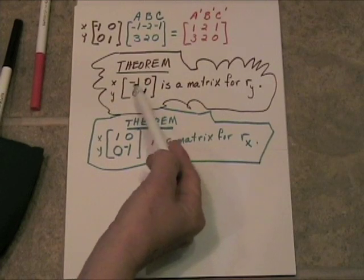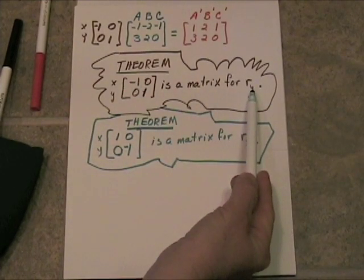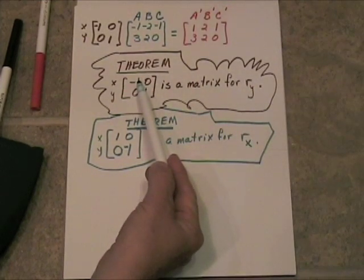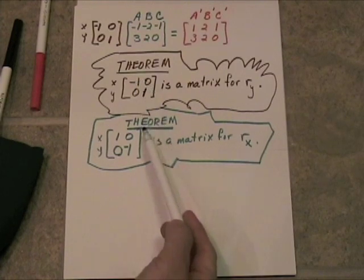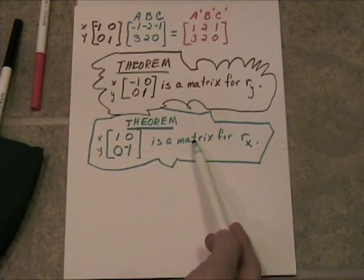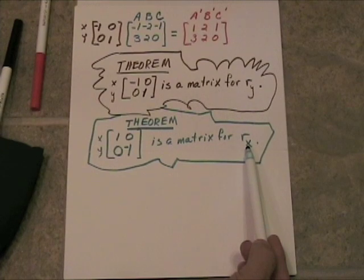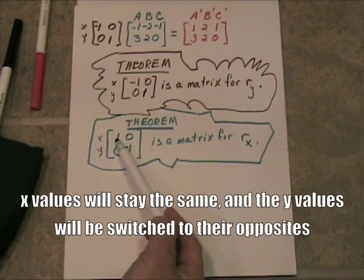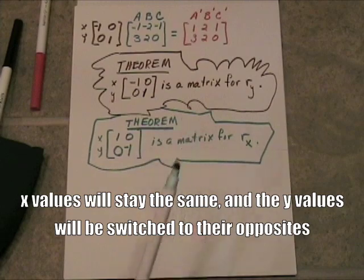See the difference here? This will give you a reflection over the y-axis because it's going to change the x's to their opposites. This is going to give you a reflection over the x-axis because the x values are going to stay the same and the y values are going to be switched to their opposites.